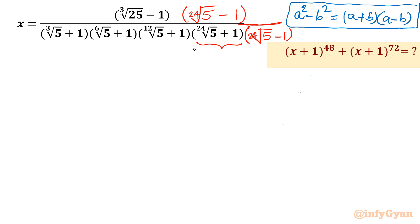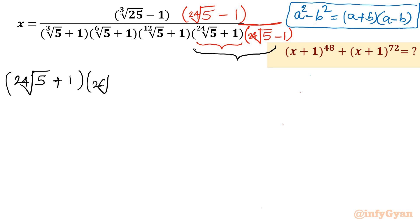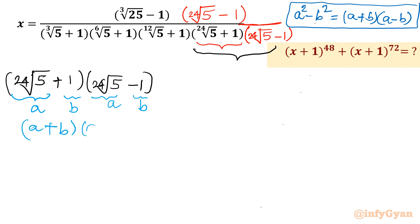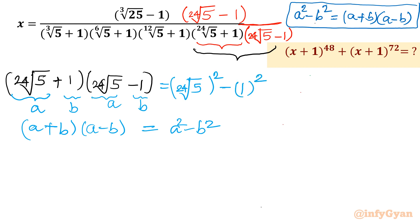Now see the effect of that. I am writing separately: 24th root of 5 plus 1, times 24th root of 5 minus 1. I will consider the first term as a and the second as b. So we have a plus b times a minus b, which gives us a squared minus b squared. That is: 24th root of 5 whole squared minus 1 whole squared, which becomes the 12th root of 5, minus 1.